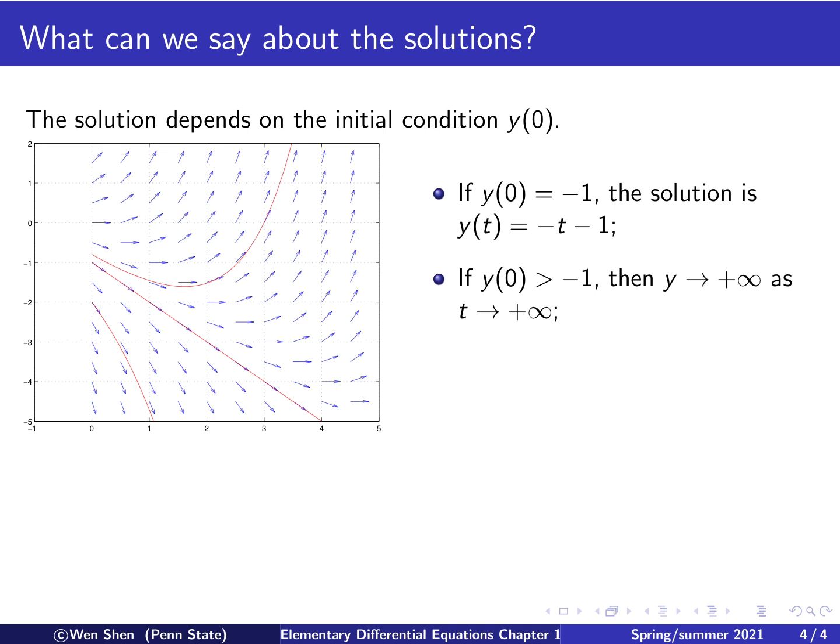Otherwise, we're not so lucky as to be able to write out the solution, but we can see the behavior. Let's say if your initial value is bigger than negative one, you start somewhere above that straight line solution. Then from the directional field, you know that you will have direction bigger than negative one, so you drift away a bit from it. And as you progress, then you drift further and further away.